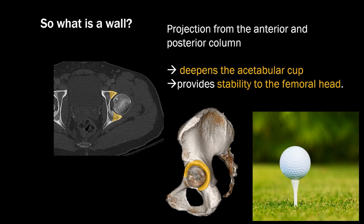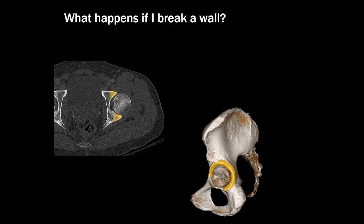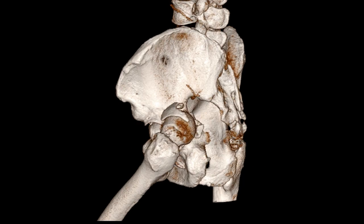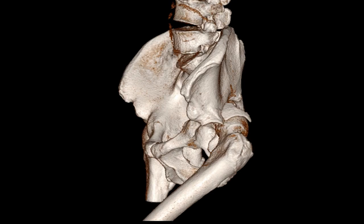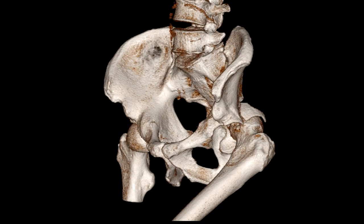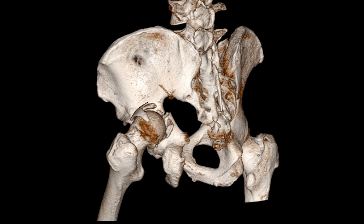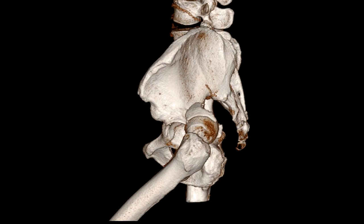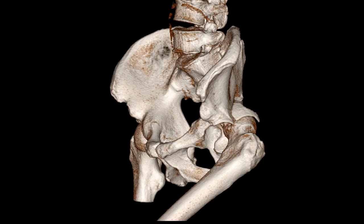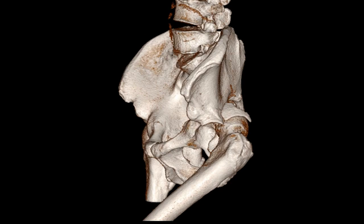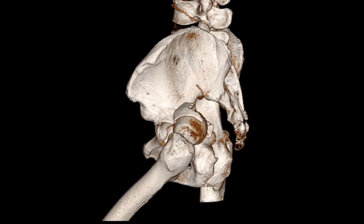This golf ball is not particularly stable sitting on this golf tee, but if we added a structure equivalent to the anterior and posterior columns, it would become much more stable. Therefore, it makes sense that if you break a wall, the femoral head becomes unstable. This is demonstrated by a case where a patient's knee hit the dashboard in a motor vehicle crash — the femoral head dislocated posteriorly and shredded the posterior wall on the way out. Unless all of that posterior wall is repaired, the femoral head is going to remain unstable.